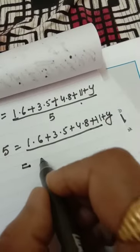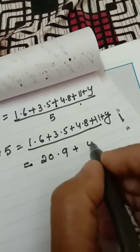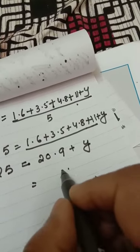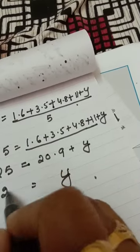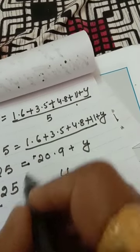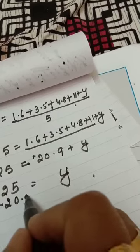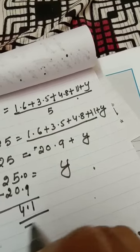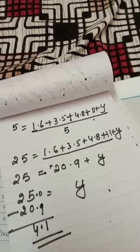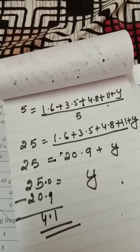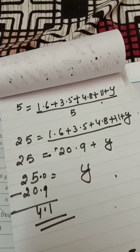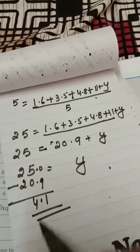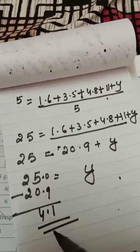You will get 20.9 plus y. Here 25, y you keep it there and the 20.9 take left side, then plus will be minus 20.9. What you will get? 4.1 as answer. Clear. This is a typical question, important question. I hope everybody understood.